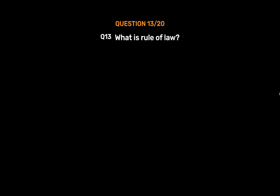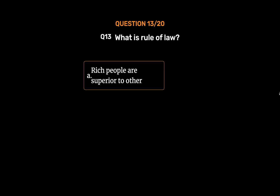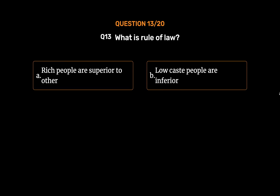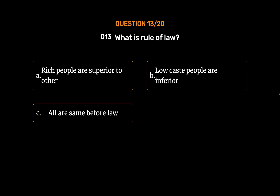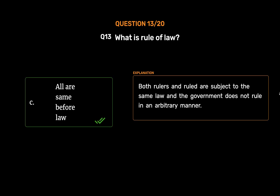Question No. 13. What is rule of law? Option A: Rich people are superior to others. Option B: Low caste people are inferior. Option C: All are same before law. Option D: None of these. The correct answer is Option C: All are same before law. Both rulers and ruled are subject to the same law and the government does not rule in an arbitrary manner.